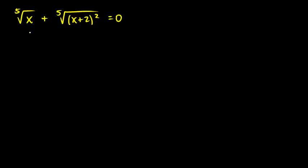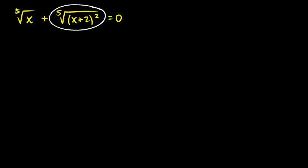The fifth root of x plus the fifth root of x plus 2 squared equals 0. We need to solve this for x — find a number we could plug in for x and have it work. To do this, I'm going to take one of these terms and move it over to the other side, and it will become negative.